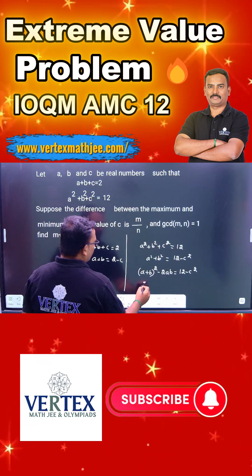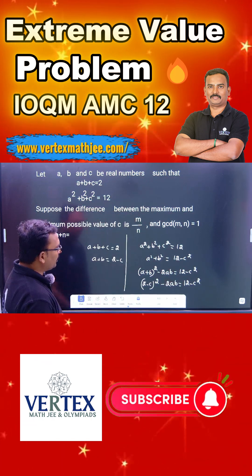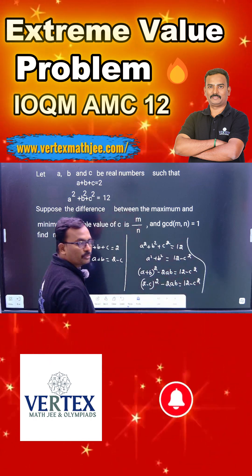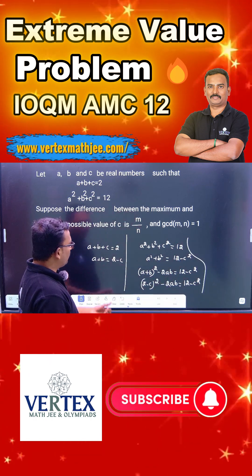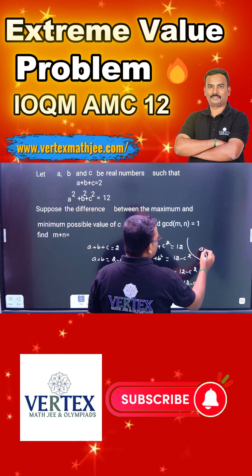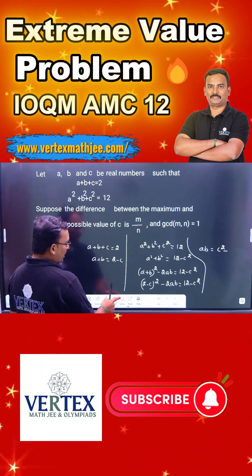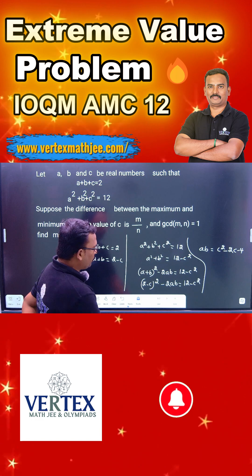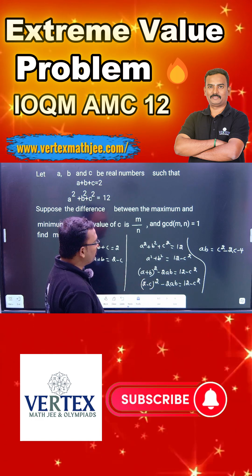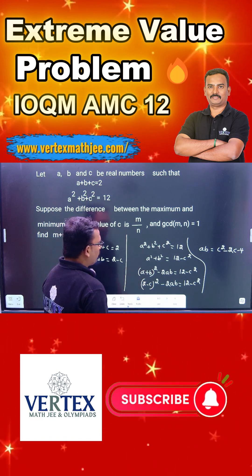But what is a plus b? 2 minus c whole squared. Now you can simplify. You can find the product of the roots. Sum of the roots in terms of c is 2 minus c. And the product of the roots, ab, equals c squared minus 2c minus 4. Just you can use the a minus b whole squared formula and simplify. You will get the product of the roots.